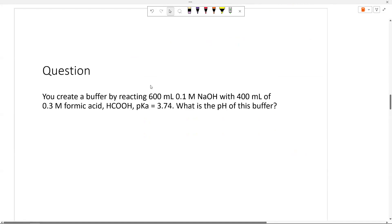So let's talk about using neutralization reactions to create a buffer. You can create a buffer by reacting 600 milliliters of 0.1 molar sodium hydroxide, strong base, with 400 milliliters of 0.3 M formic acid, HCOOH. So here would be our acidic hydrogen, carboxylic acid. And we want to know the pH of the buffer, and the pKa is 3.74.